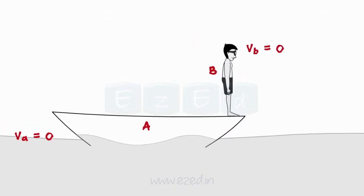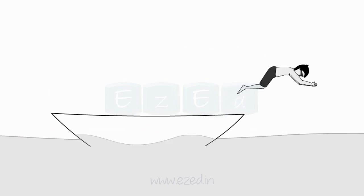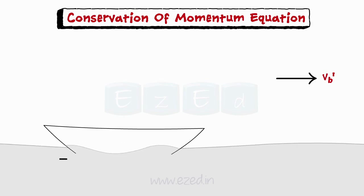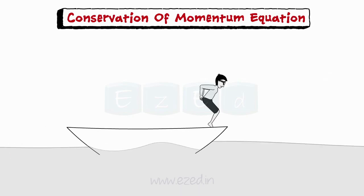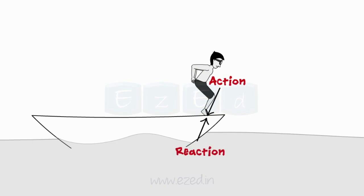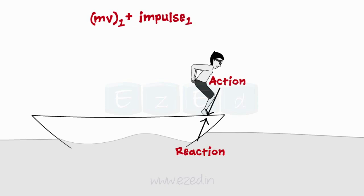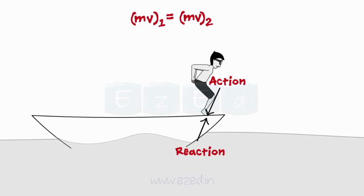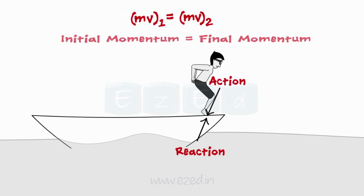Consider a boy standing on a boat. Both are initially at rest. If the boy jumps off horizontally into the water with velocity VB', he induces a backward motion in the boat, which starts moving with velocity VA'. To jump off, the boy exerts an impulsive force through his feet on the surface of the boat, inducing a reaction impulsive force from the boat on the man. These are action and reaction forces acting for the same time interval. Due to this, the net impulse in the direction of motion is zero. So for a dynamic situation involving a system of particles, if the net impulse is zero, the momentum of the system is conserved. The conservation of momentum equation is expressed as: initial momentum equals final momentum.